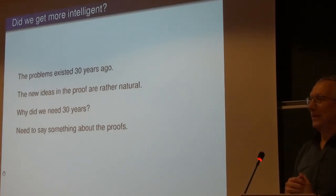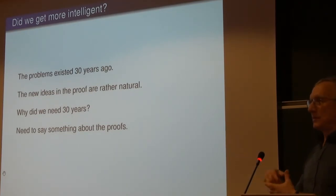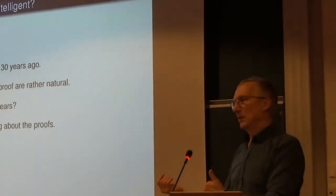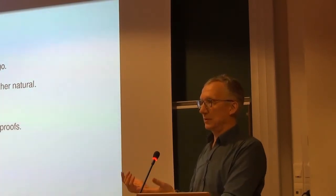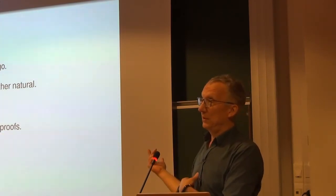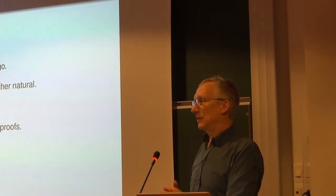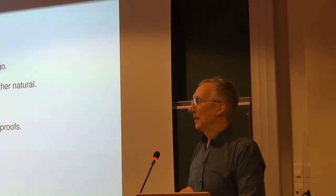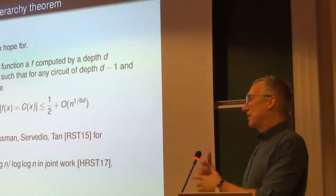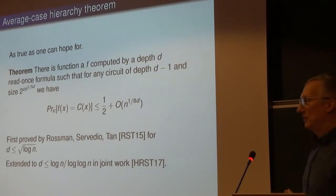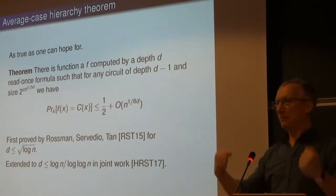Is there a relationship between average-case and worst-case lower bounds? It depends — if you have randomized circuits that are correct with high probability for each input you can amplify by taking majority. But here we have a problem: we can't compute majority in constant-depth circuits because it's harder than parity. So in these low classes they're rather different. And yes — by 'average' I mean the uniform distribution; if you have a strange distribution the game changes.